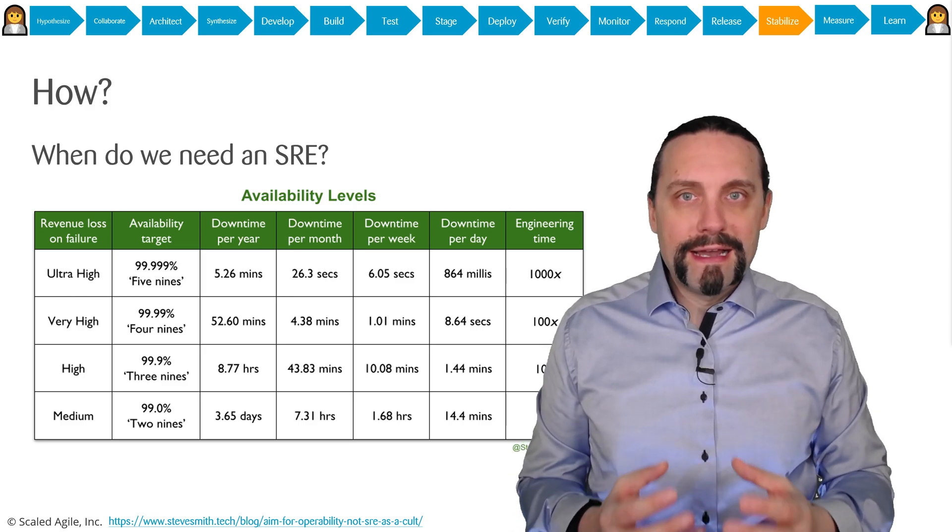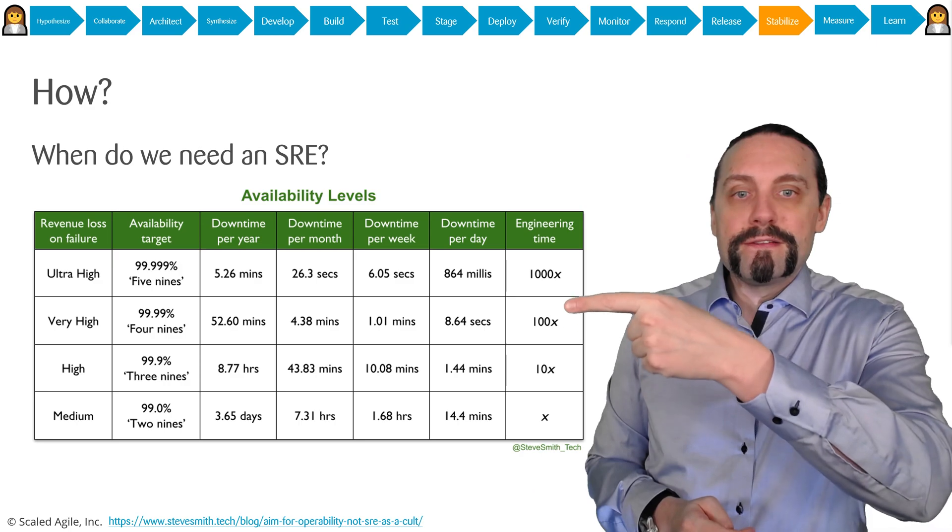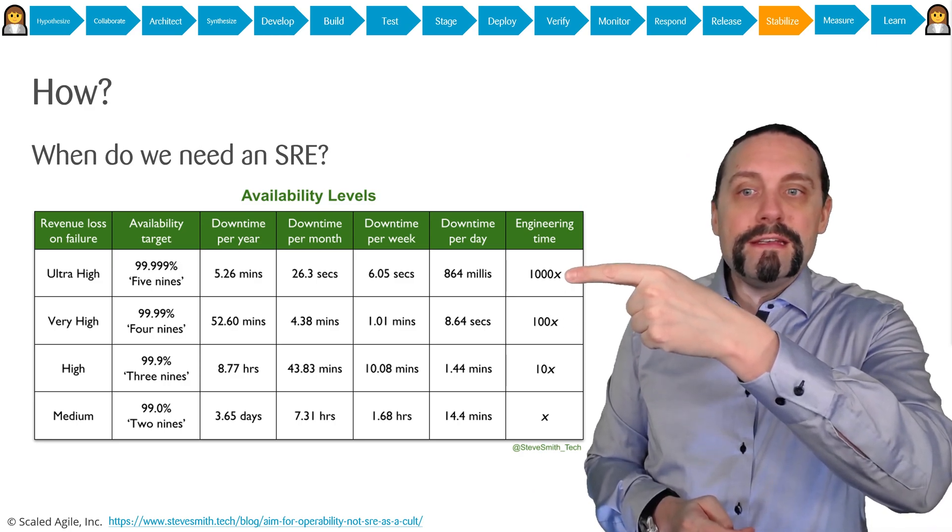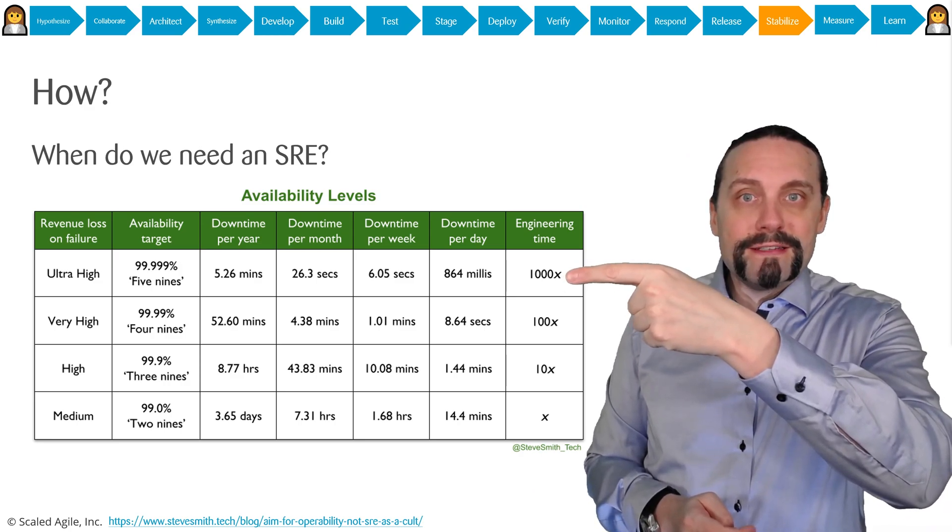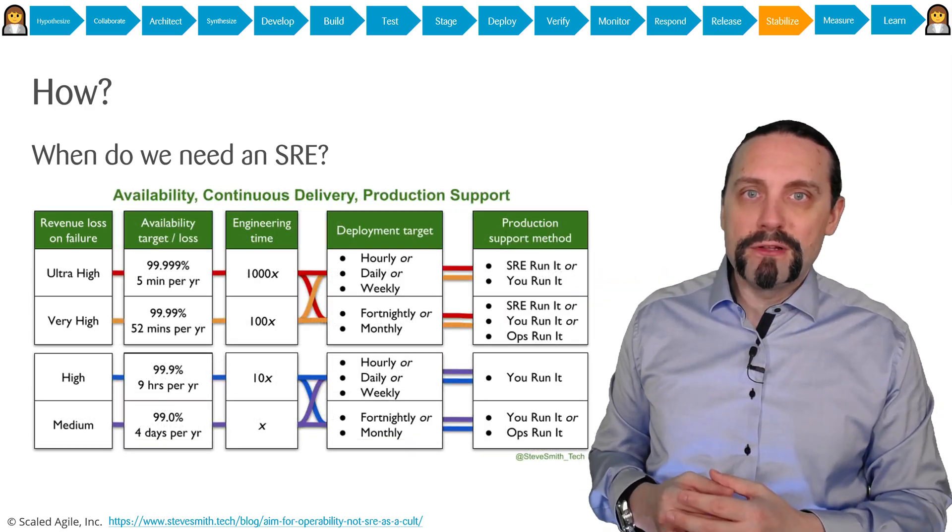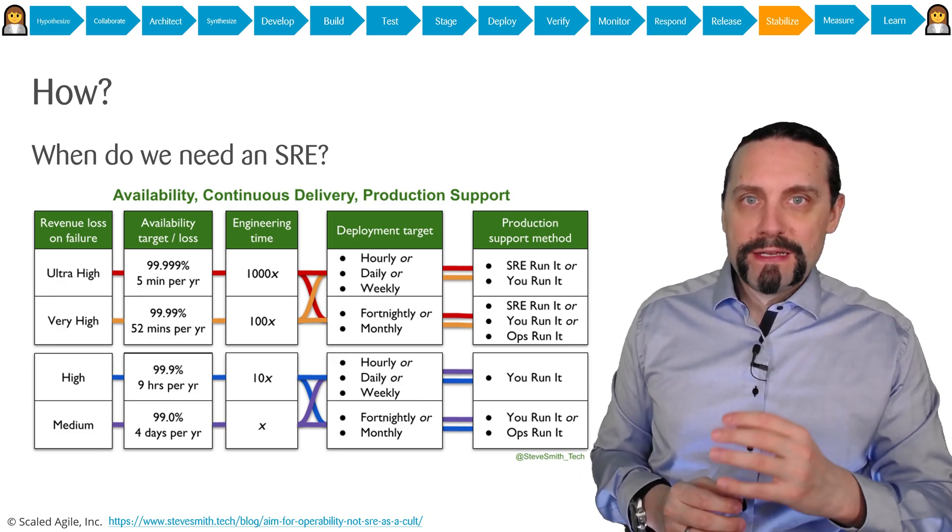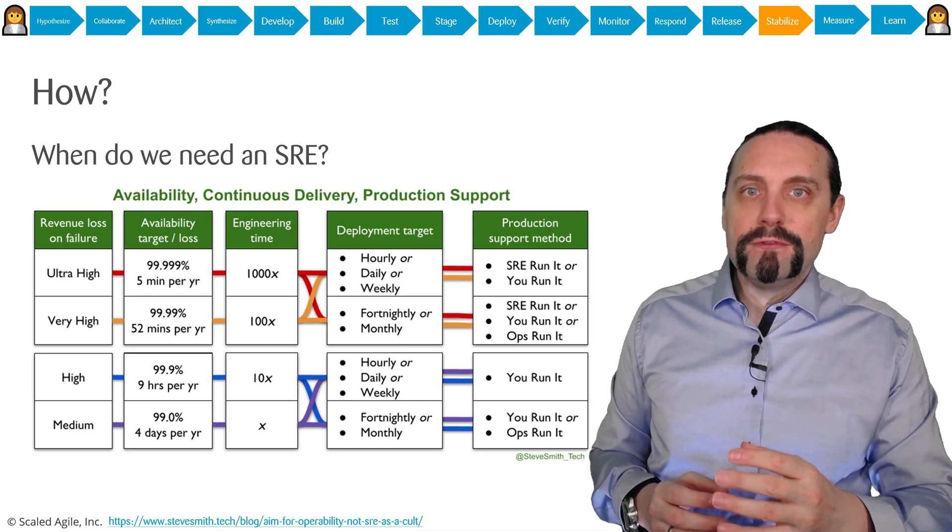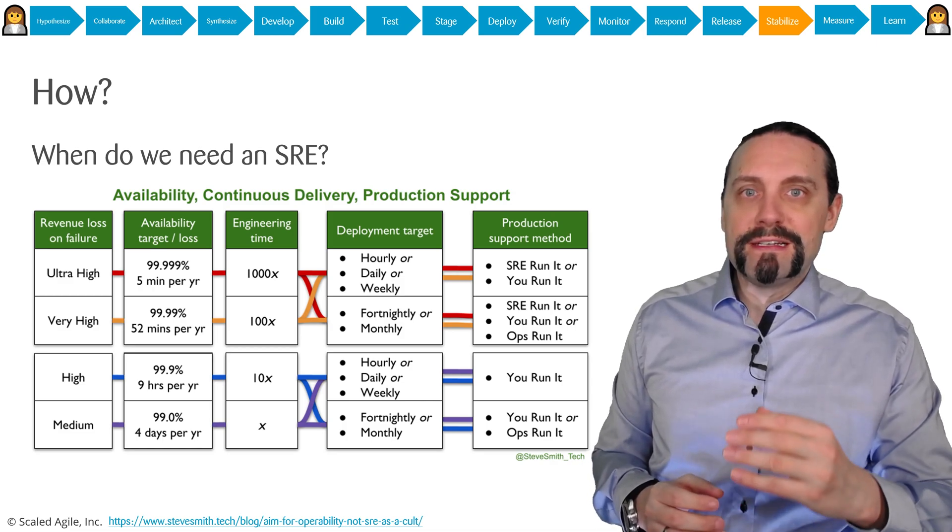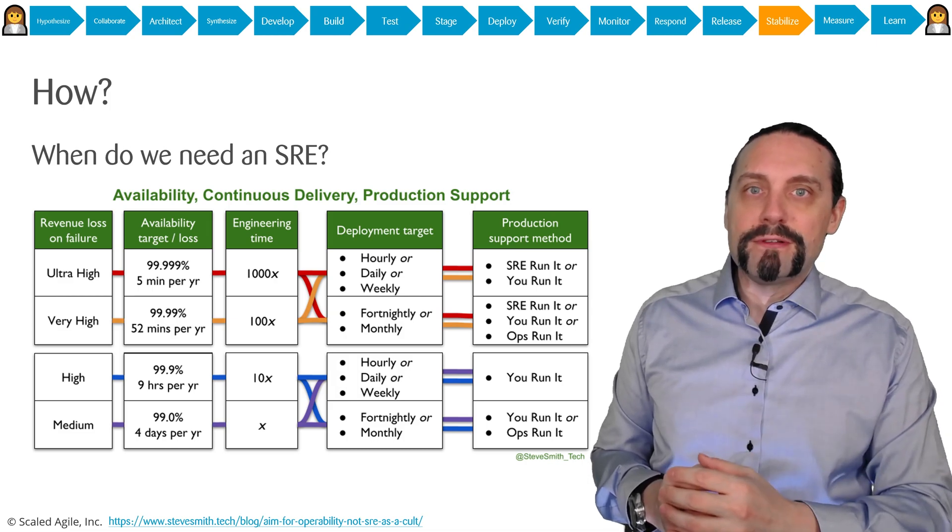Engineering a high available system gets very difficult the higher the availability target gets. SREs are highly skilled people which are very good at development and operation. They are best used when you have a system which needs to be highly available and needs to be massively scalable.